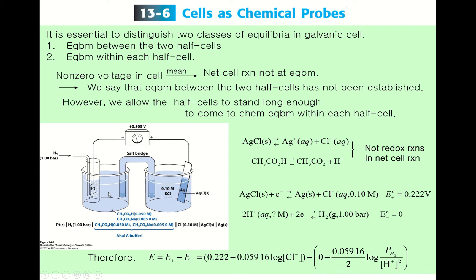This is essentially a standard hydrogen electrode if the proton concentration in the solution is one molar. Unfortunately, the solution composition here is more complicated: it contains acetic acid at 0.05 molar and sodium acetate at 0.005 molar, so the proton concentration is unknown.